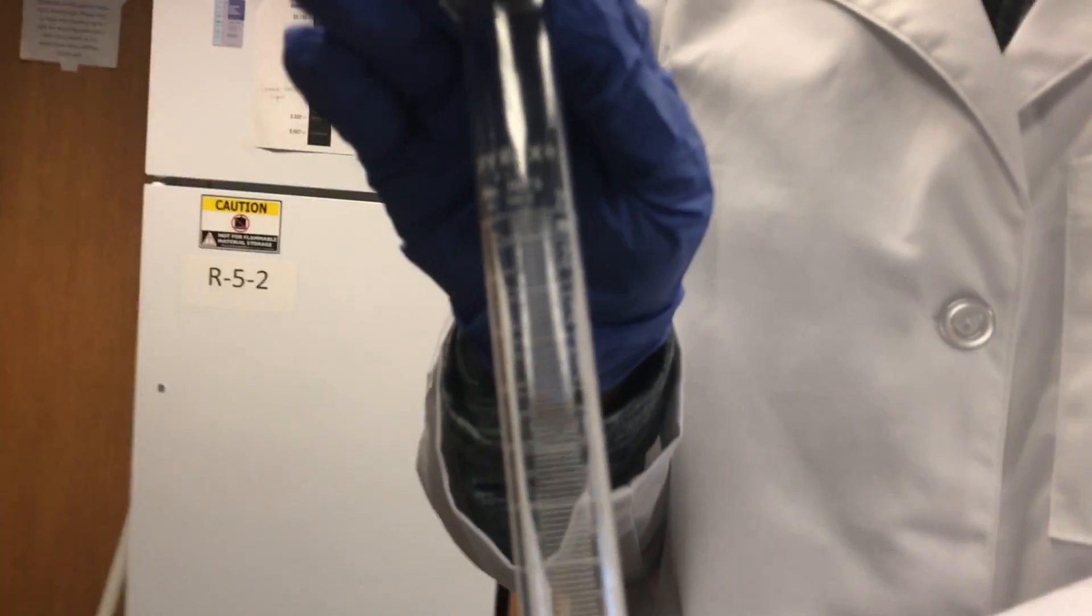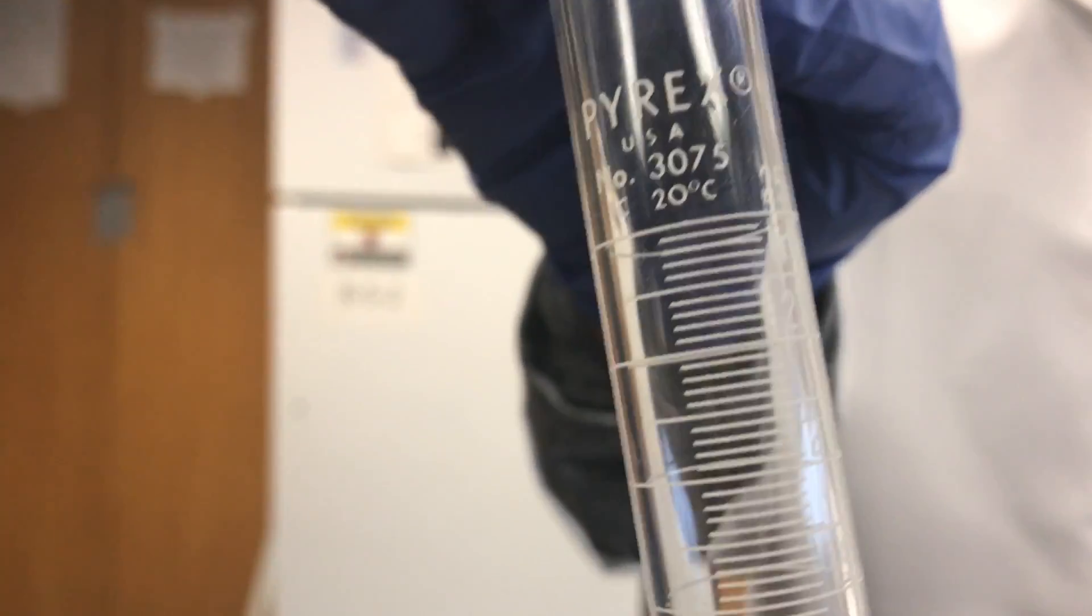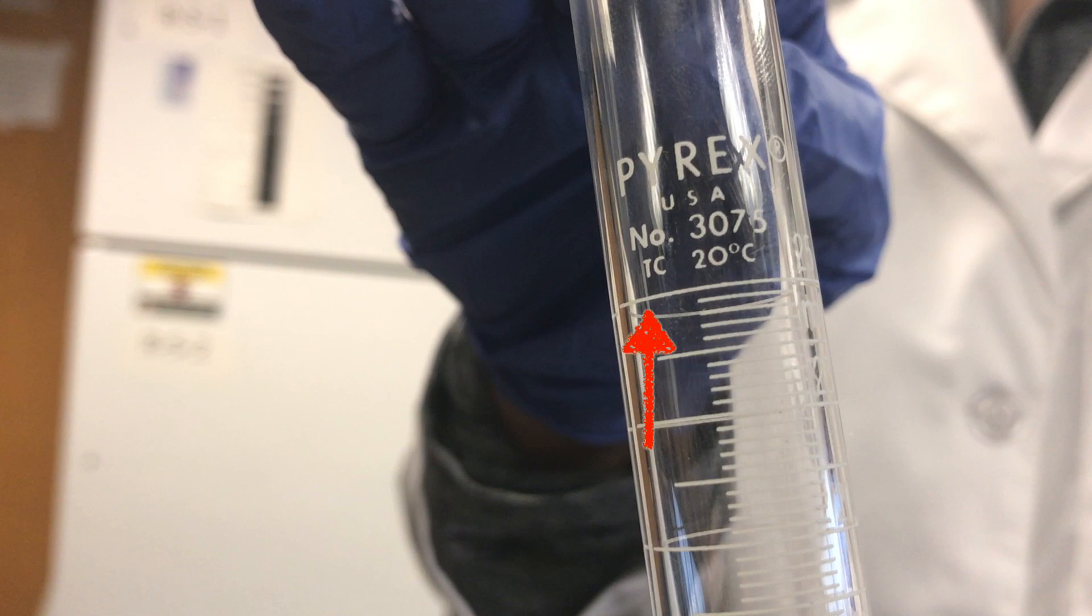On this piece of glassware you can note that it says TC and not TD. This means to contain and in order to accurately use the glassware you must rinse it with DI water to ensure the transfer of all of the liquid.